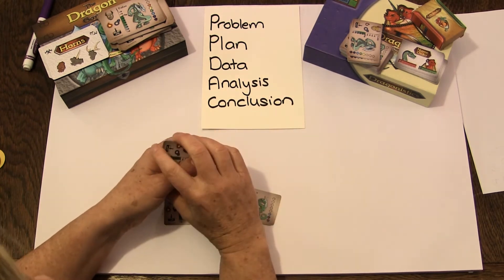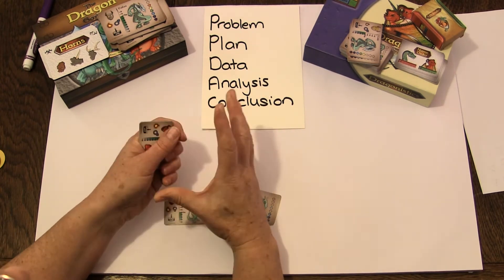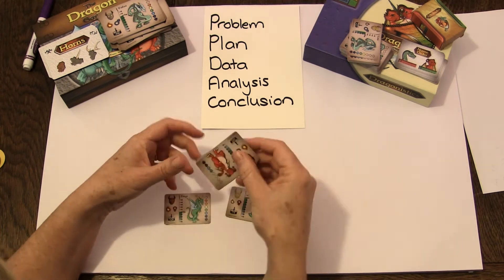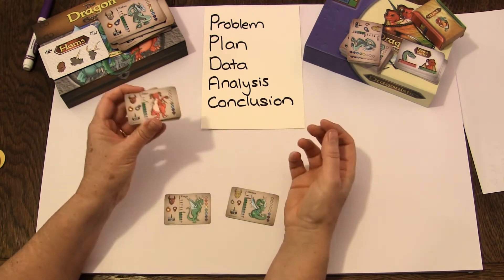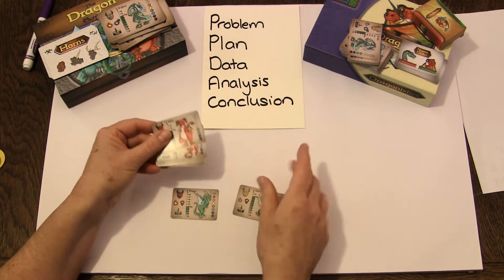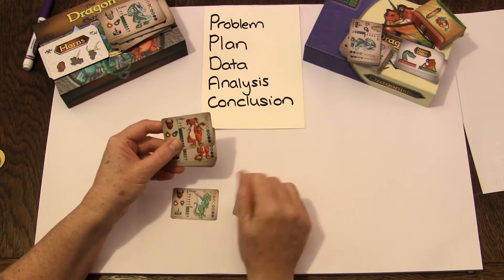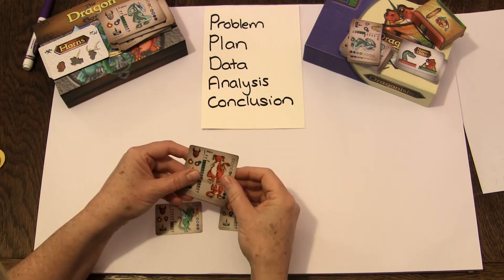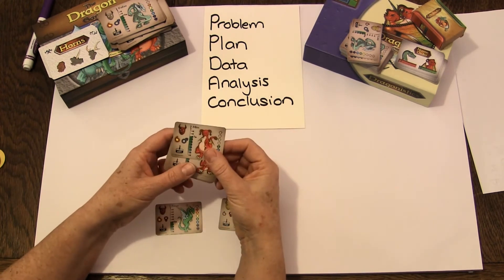So the problem was how many of my dragons are friendly? The plan is we're going to take some of our dragons and count them and see how many are friendly. So our data is the cards themselves. We're going to get our data, then we're going to do an analysis and give a conclusion.